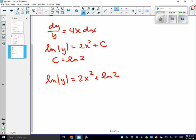So, does ln of Y equal 2x squared plus ln of 2? E to the 2x squared plus 2. So, Y equals E to the 2x squared plus ln of 2, doesn't it? Yeah, E to ln of 2 turns into 2. How do we know C is ln of 2?